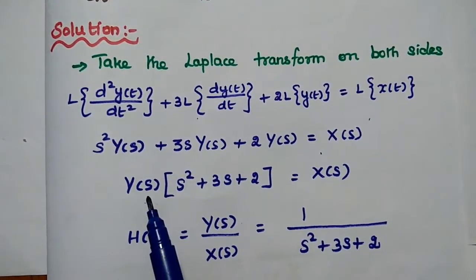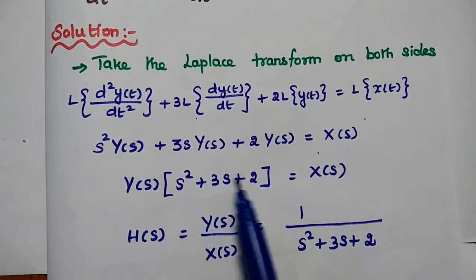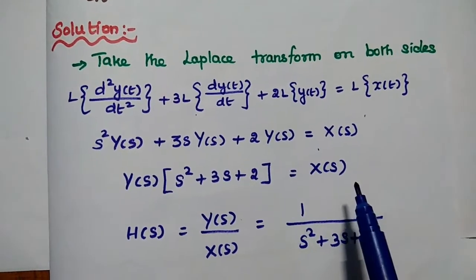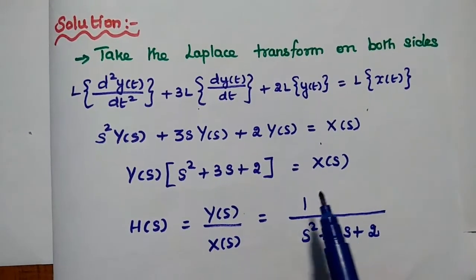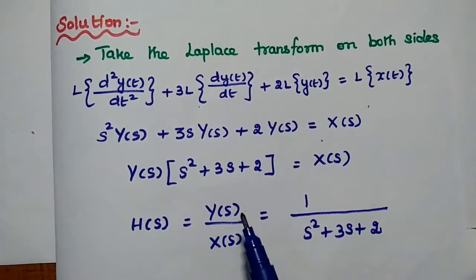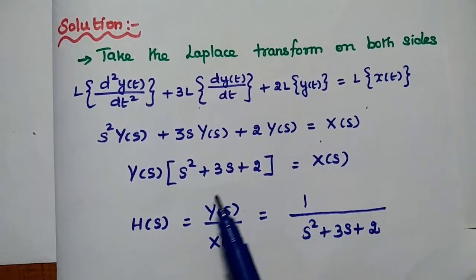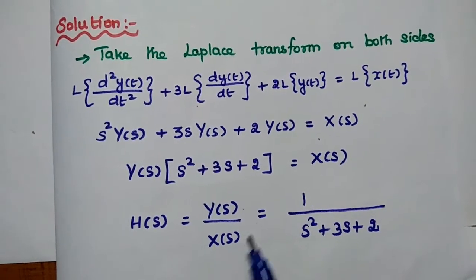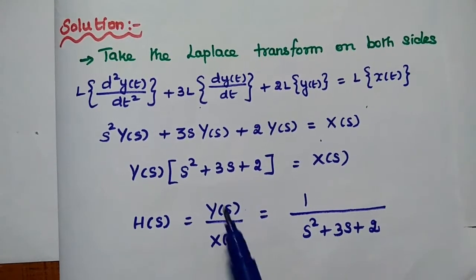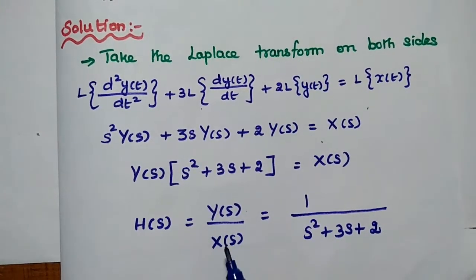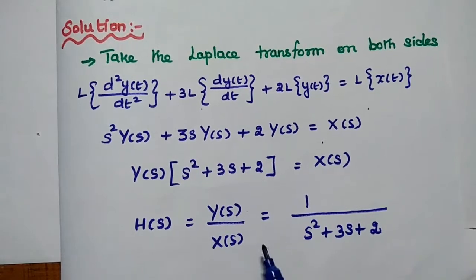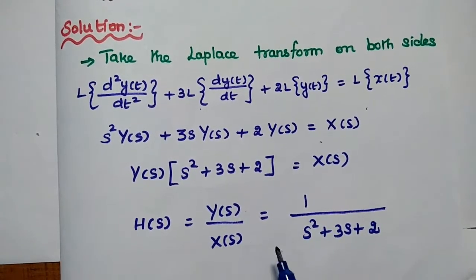We take Y(s) as a common term on the left hand side and move terms to the right hand side. Since the transfer function is the ratio of the Laplace transform of the output to the Laplace transform of the input, we get H(s) equal to Y(s) divided by X(s), which equals 1 divided by s squared plus 3s plus 2. So now we have obtained the transfer function of the system.